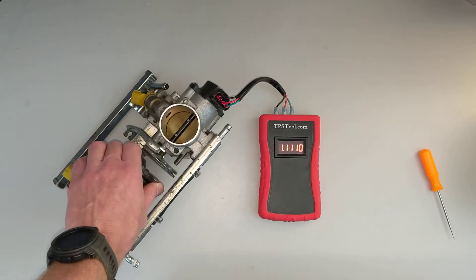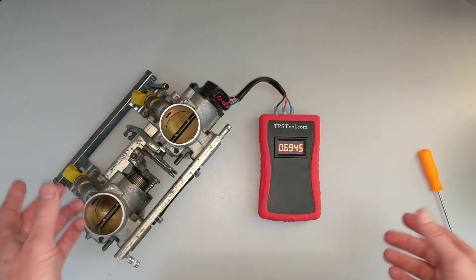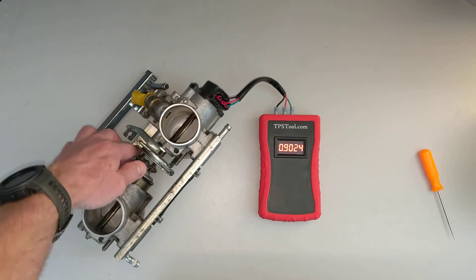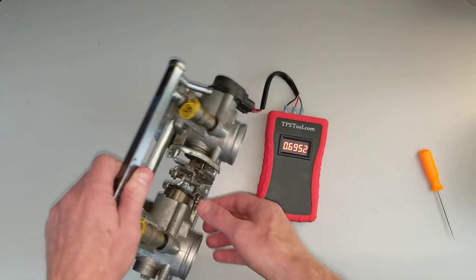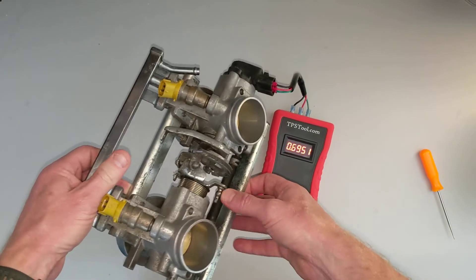And that shows a properly working TPS because it's smooth all the way through, no jumps or skips. So that means this TPS is functioning correctly. And if you wanted to make an adjustment, then this is where you'd make the adjustment here according to whatever motor you've got.